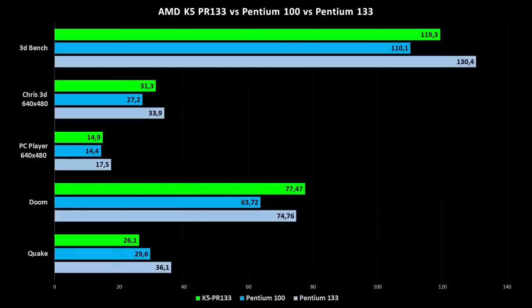At PC Player at 640x480 the AMD scored 14.9 frames. Looking at the charts, we get roughly the same ratios as before. At 3D bench the Pentium 100 was 10 frames slower than the AMD, while the Pentium 133 was 10 frames faster. A similar ratio appears at Chris 3D bench and PC Player. Interesting is that at DOOM the AMD took the lead and was a bit faster than the Pentium 133 — and this was the only benchmark where the AMD could reach a PR-133 performance. Maybe AMD was referring this PR-133 rating to DOOM. At Quake, the AMD was the slowest and the Pentium 133 the fastest.